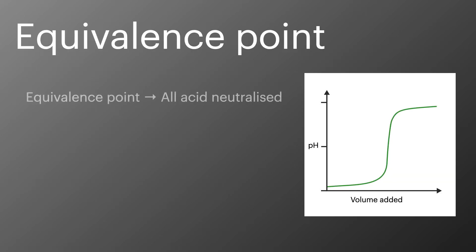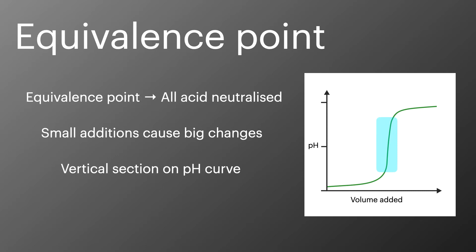The equivalence point is a name given to the point at which all the acid or the base has been neutralized. At this point small additions of the base cause a big change in pH and this creates a vertical section on the line, which is shown here in the blue area of the pH curve.